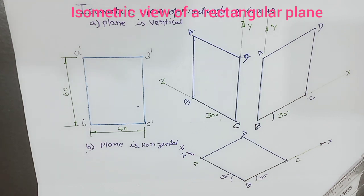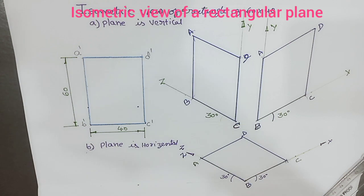That's about the discussion of construction of an isometric view of a rectangle. I hope everyone understood well. Thank you.